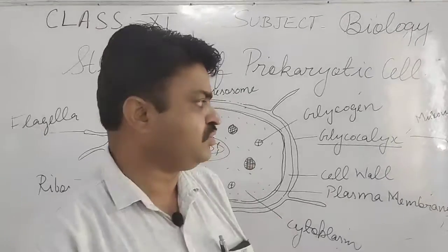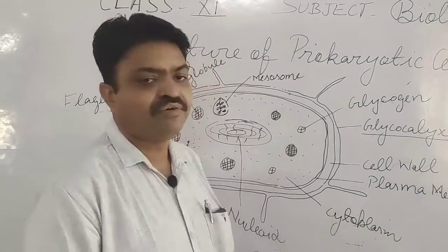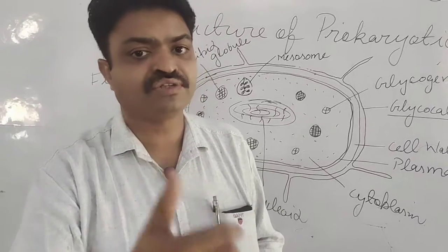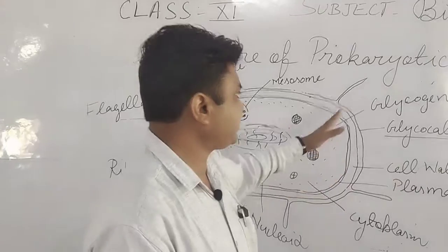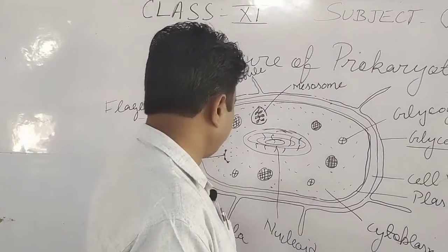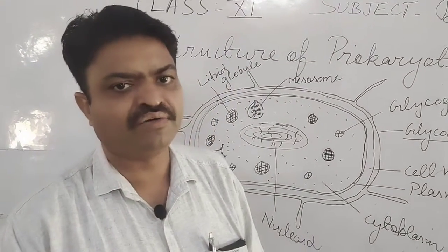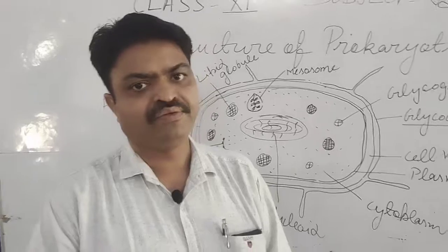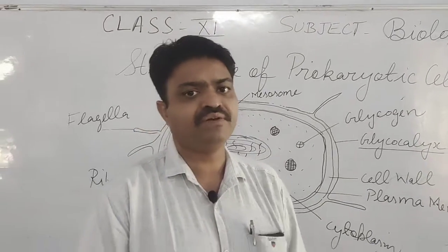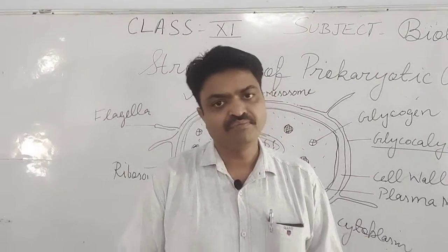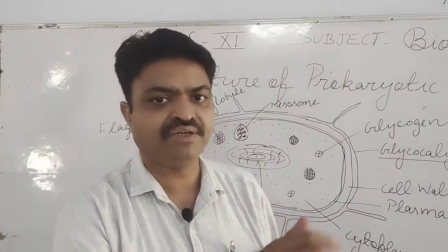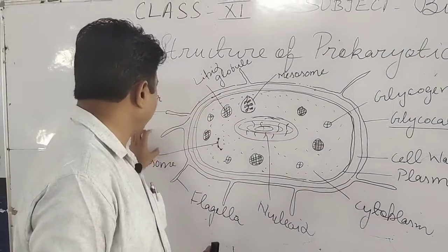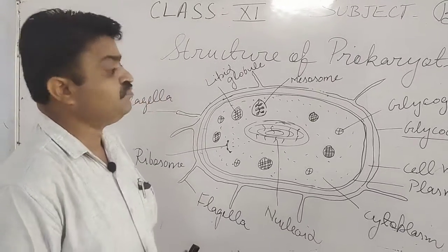There are also extensions found around the glycocalyx, and these extensions are known as flagella. They help the bacterial cell in movement. There are two types of bacterial cells: motile and immotile. Motile bacteria can move from one place to another, but immotile bacteria stay in a particular place. These flagella help the bacteria in movement.